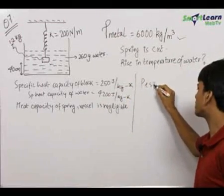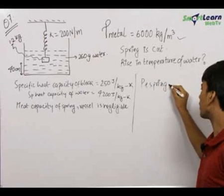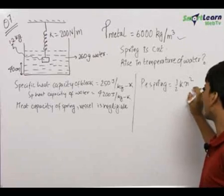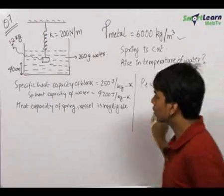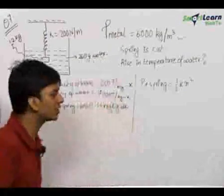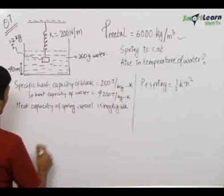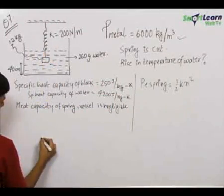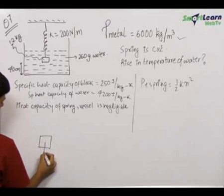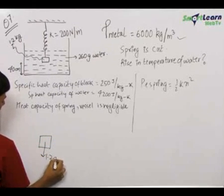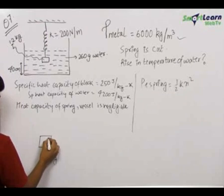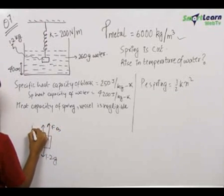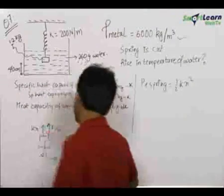The potential energy of the spring initially was equal to ½kx², where k is the spring constant and x is the extension in the spring. To find the extension in the spring initially, we write Newton's law equation on this block in the vertical direction. For this block, 1.2g acts downward, and there is a buoyant force and a spring force equal to kx both acting upward.